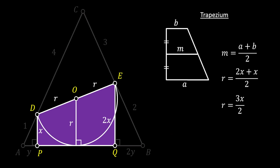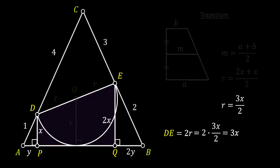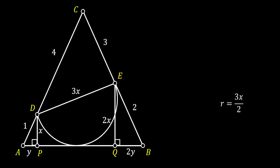Furthermore, we can find the length of line DE. DE is the diameter of our half circle, so it equals two times the radius. Substituting our value, we get that DE has the length of 3x. We'll substitute this value of 3x for DE and save our radius value for later.